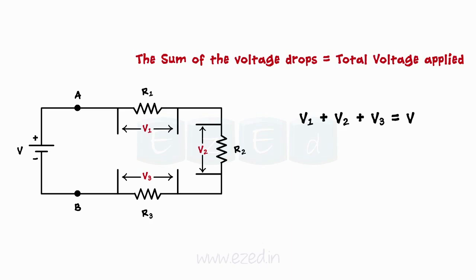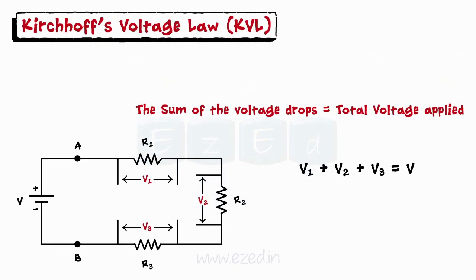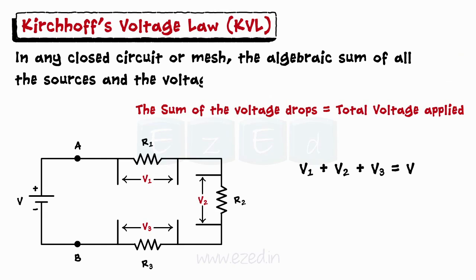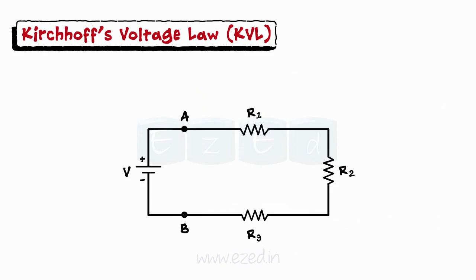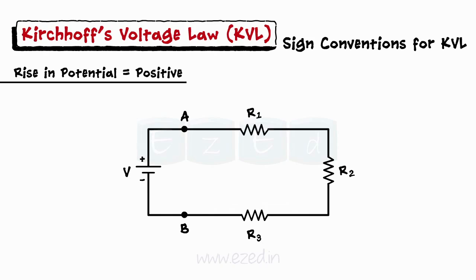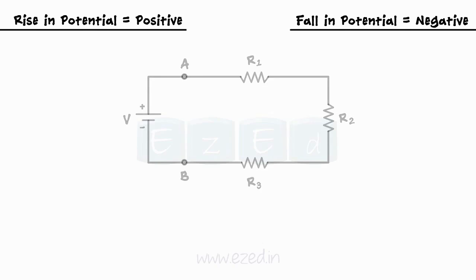This is the Kirchhoff's voltage law which states that in any closed circuit or mesh, the algebraic sum of all sources and voltage drops is equal to zero. Before studying the law mathematically, let's first understand some sign conventions related to KVL. The rise in potential is considered as positive whereas fall in potential is considered as negative.